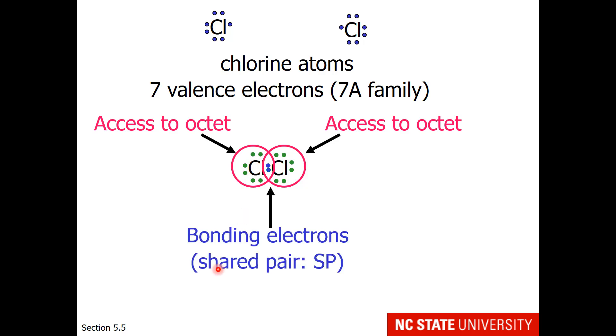The shared electrons are called bonding electrons, or also a shared pair, which you may see abbreviated as SP. The unshared electrons are called non-bonding electrons, also called lone pairs, and you may see these abbreviated with LP.